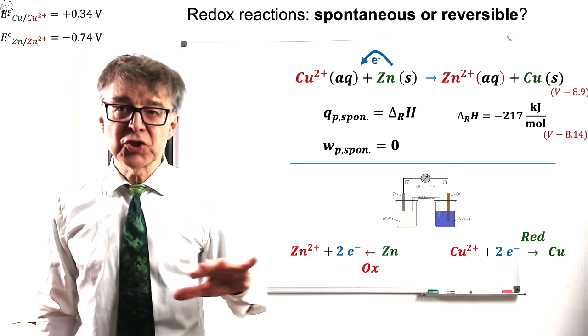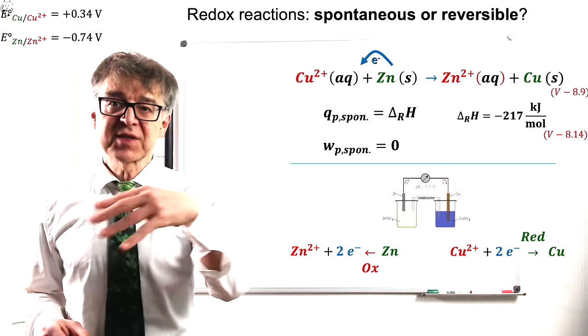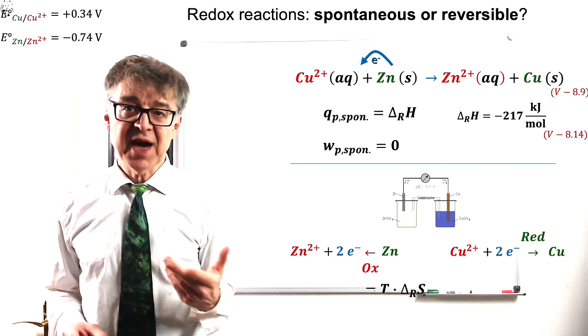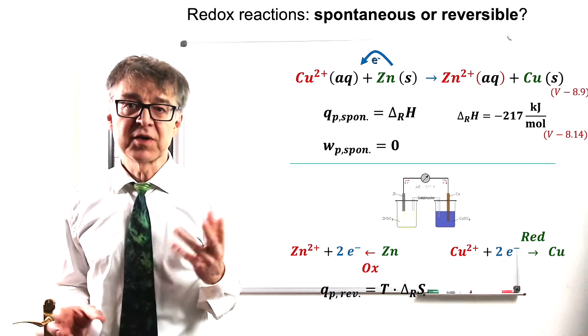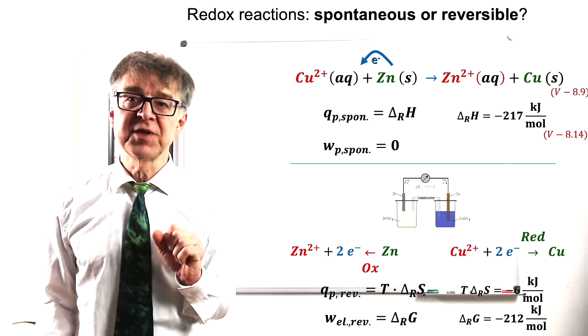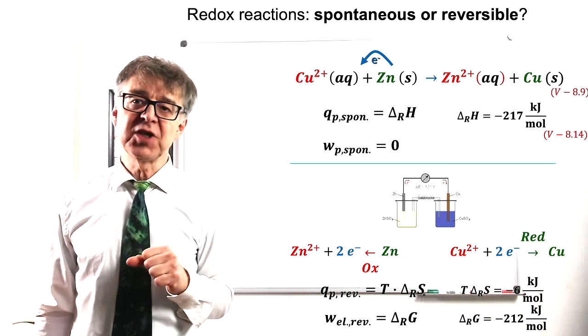If the same reaction takes place in a Daniel cell, oxidation and reduction are spatially separated. Electrons have to flow through an external circuit and electrical work can be obtained. Ideally, in so-called reversible operation, we get a maximum of negative 212 kJ of useful work and this corresponds to Gibbs free energy delta G.